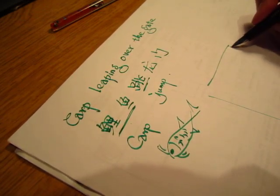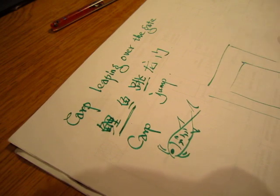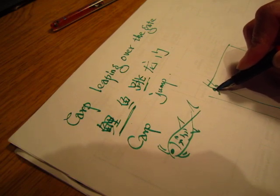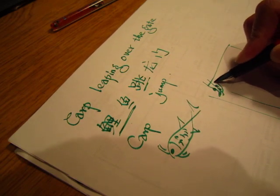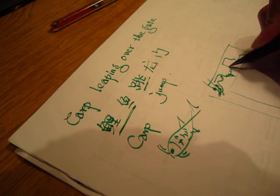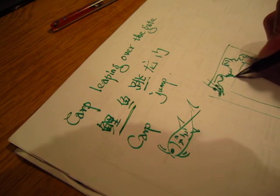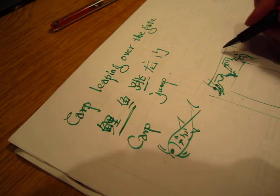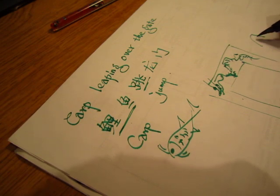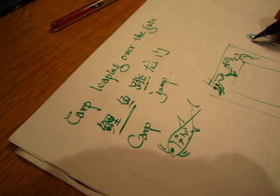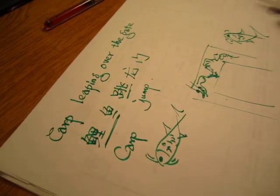Leaping over the gate. So there is a dragon gate. How to draw a dragon? A dragon has big eyes. So this is the dragon gate, and there is a little fish, the little carp fish, or little carp fish is trying to jump over it.